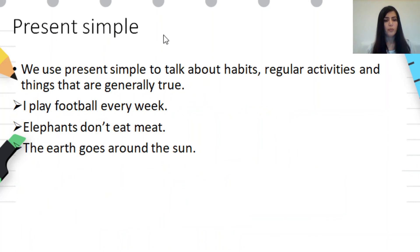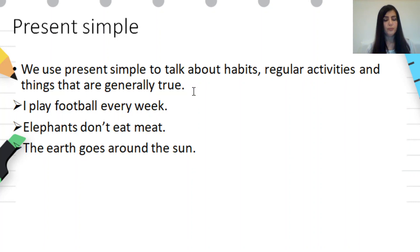When do we use present simple? We use present simple to talk about habits, regular activities, and things that are generally true. For example: 'I play football every week.' 'Elephants don't eat meat.' 'The earth goes around the sun.'